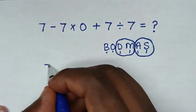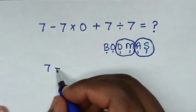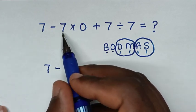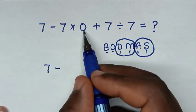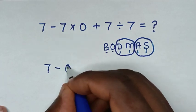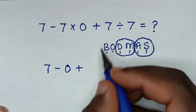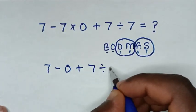So it will be 7 minus, we deal with multiplication first, 7 × 0 = 0, then plus 7 ÷ 7.